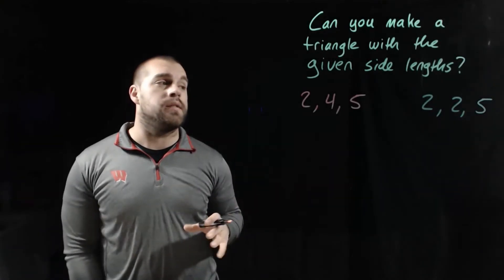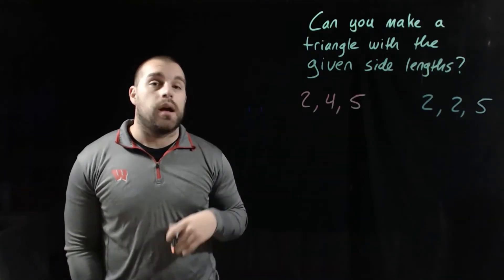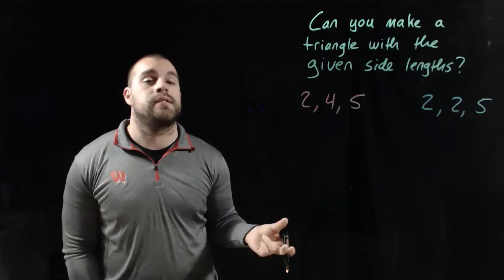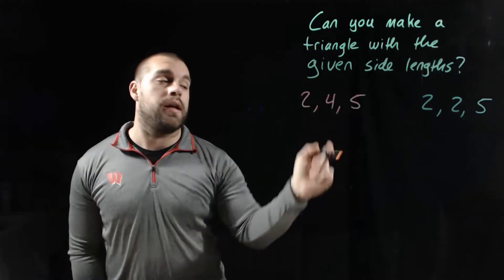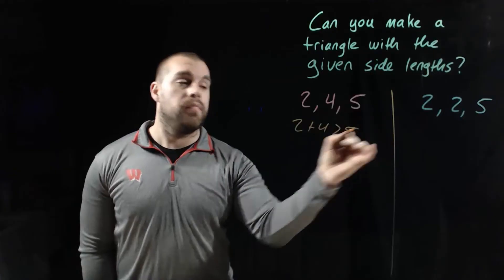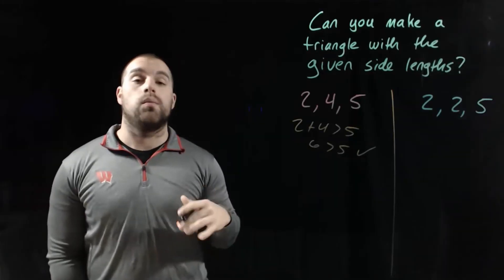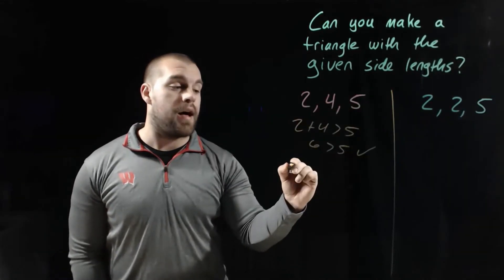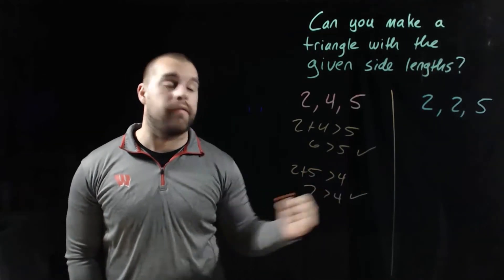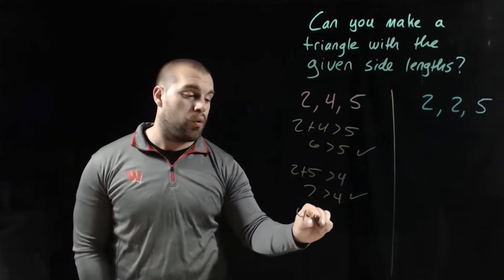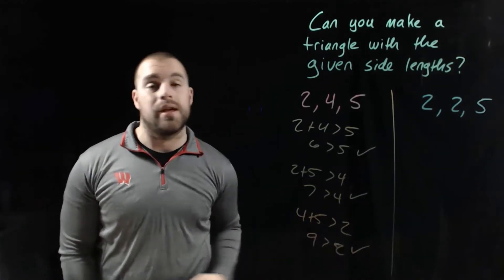Given three possible side lengths, can we form a triangle? Let's start with side lengths 2, 4, and 5. Adding the first two: 2 plus 4 is 6, and 6 is bigger than 5, so that works. Checking the next pair: 2 plus 5 is 7, and 7 is greater than 4, so that works. Our last pair: 4 plus 5 is 9, and 9 is bigger than 2. Yes, we can form a triangle with sides 2, 4, and 5.